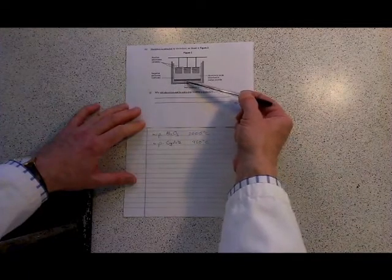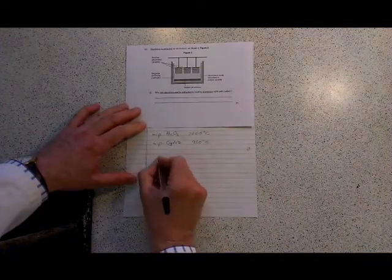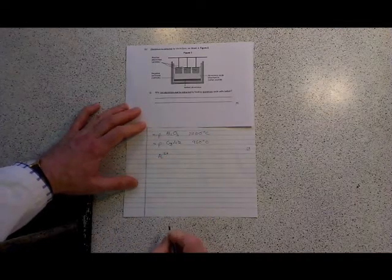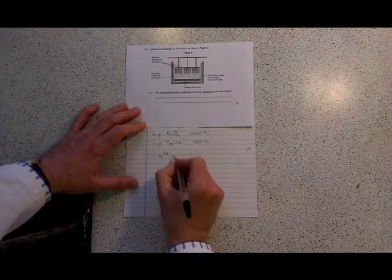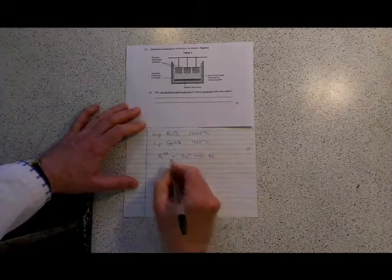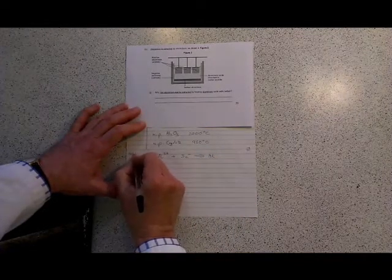The aluminium ions go to the negative electrode. Aluminium, being in group 3, has aluminium 3 plus ions, so they have to gain 3 electrons to become aluminium. And remember, that's at the negative electrode.